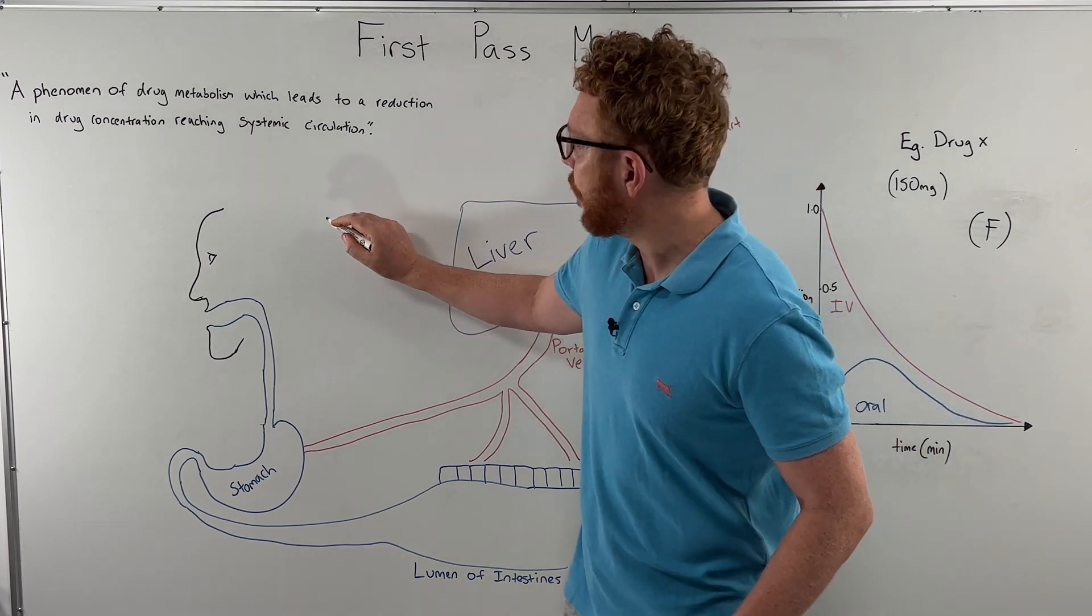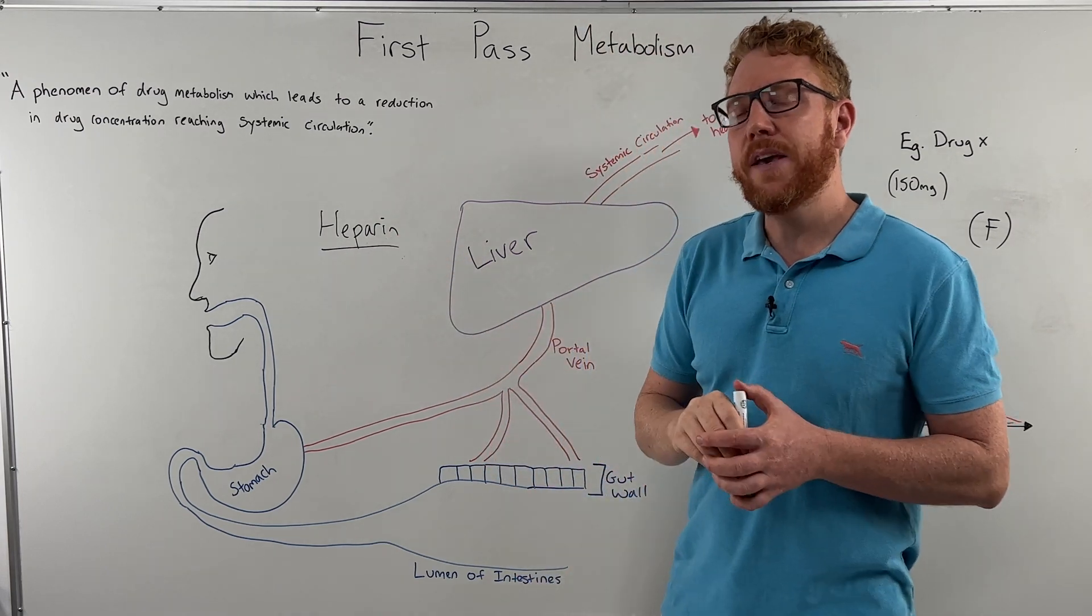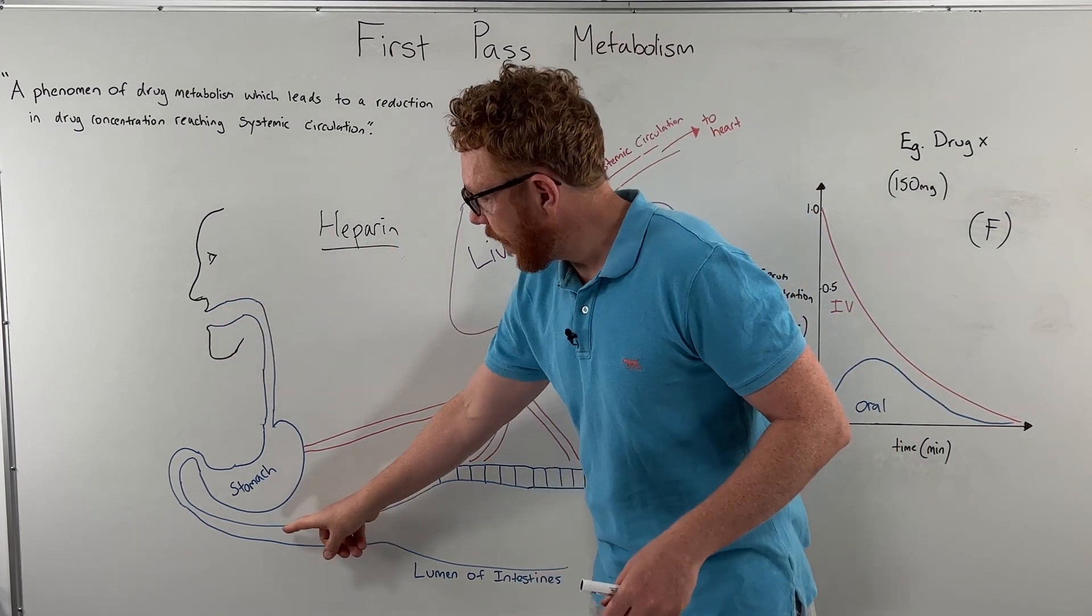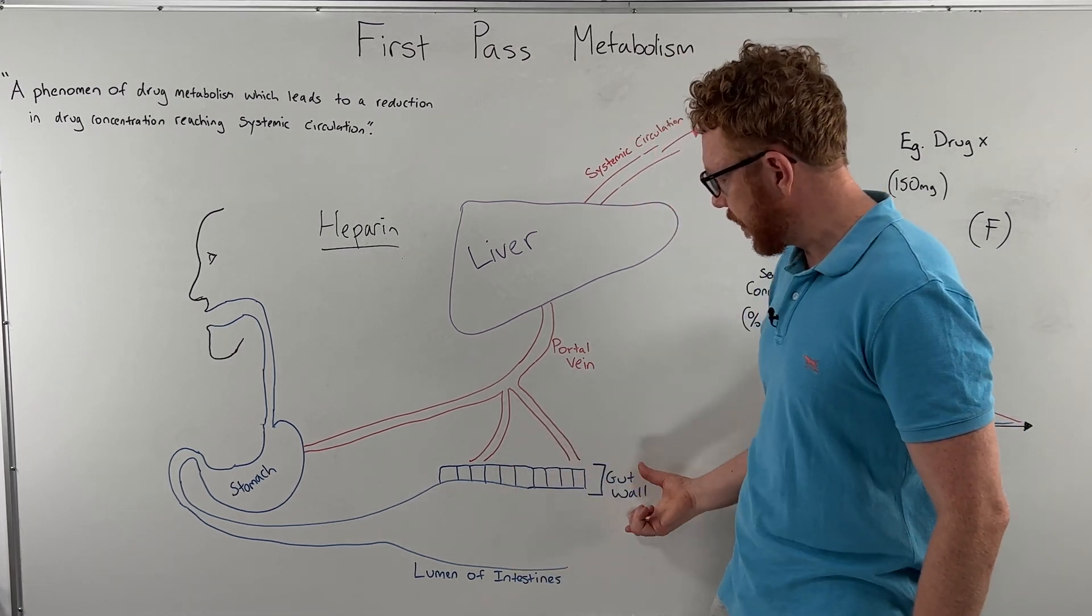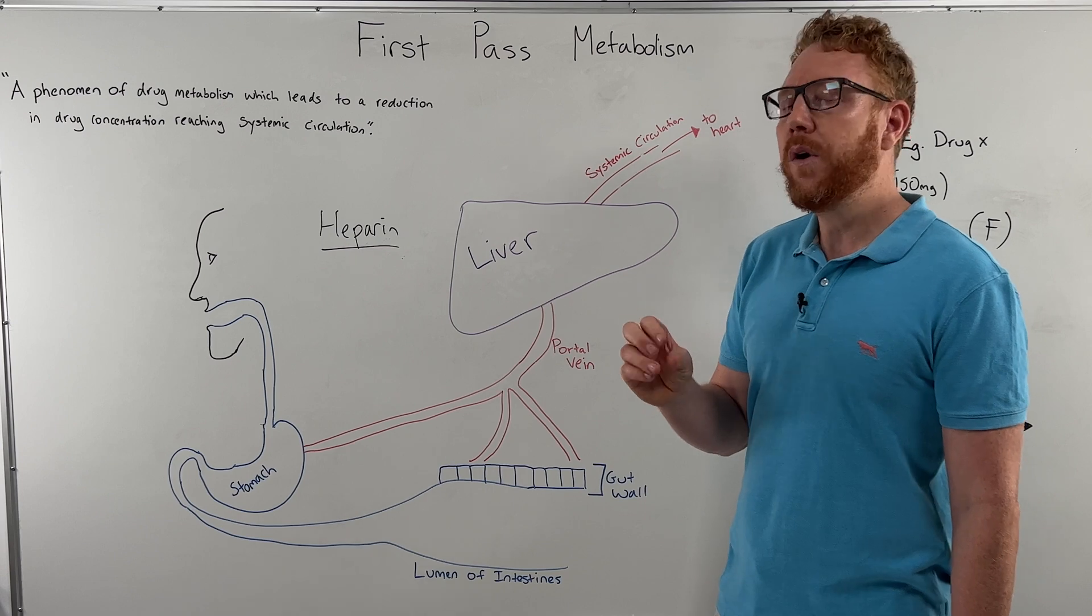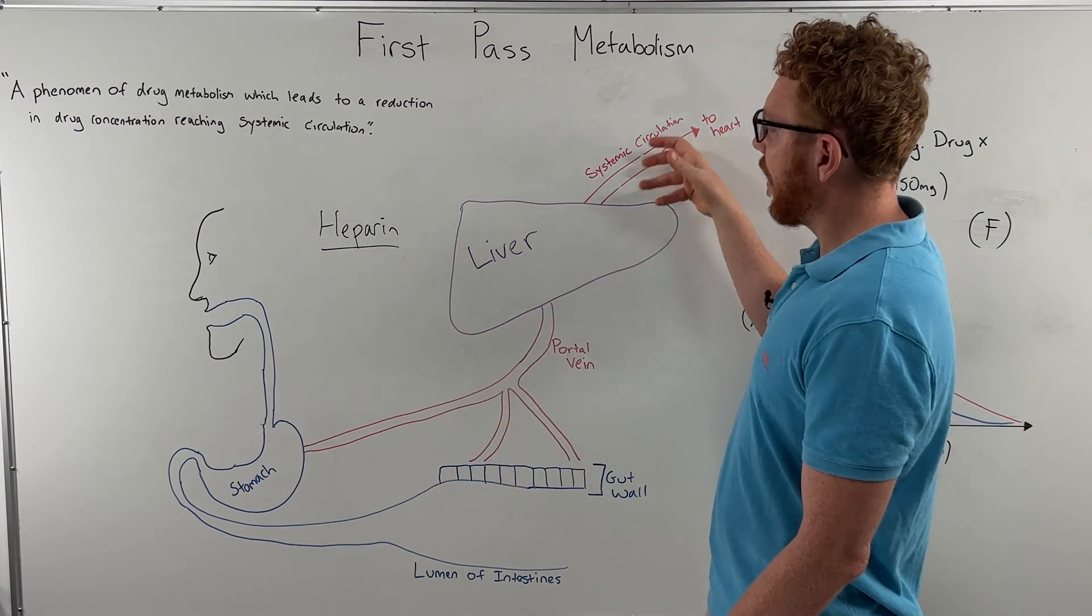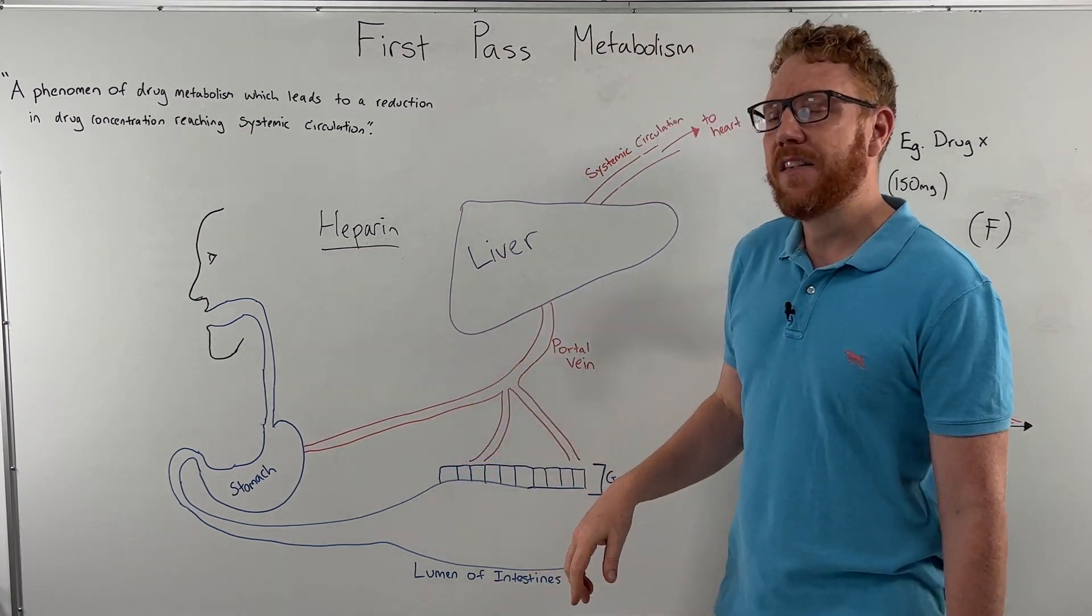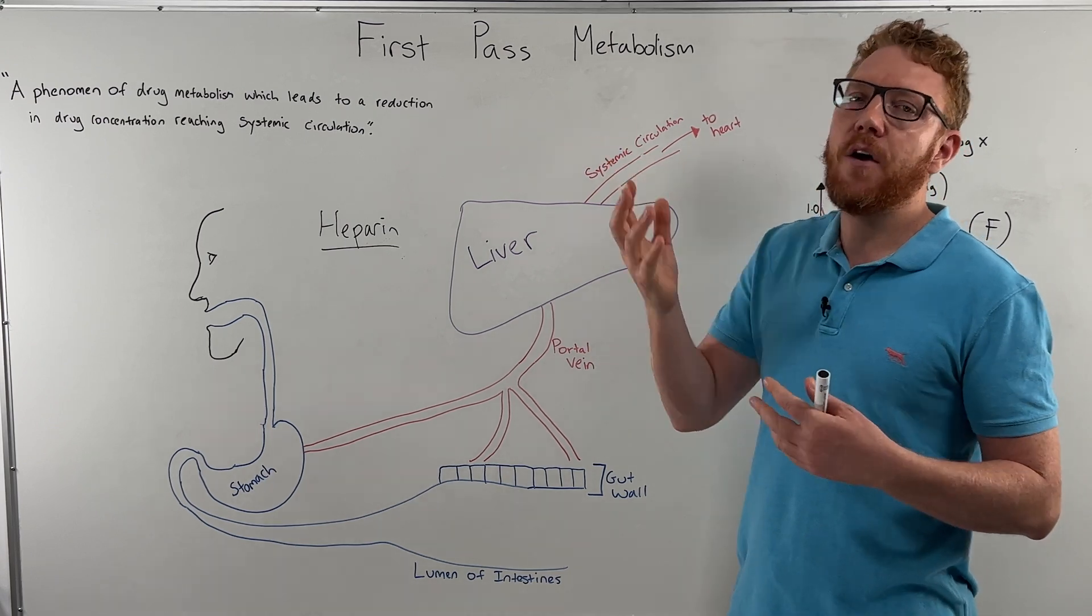An example of that is heparin. Heparin is a drug, it's an anticoagulant, which means it thins the blood. If we were to give heparin orally, once it reaches the small intestine, because it's a large molecule and it has a charge to it, it's not well absorbed across the gut wall. So most of the drug will end up in the toilet. So it will have a very low bioavailability or it has a very strong first pass effect, which means not much passes through into the systemic circulation. Therefore, heparin, we don't give it orally because it has very poor absorption. We rather give it as an injection and it works better that way. It has a higher bioavailability.